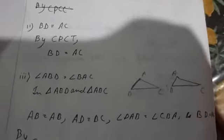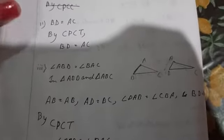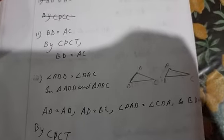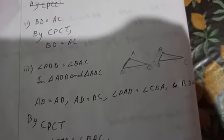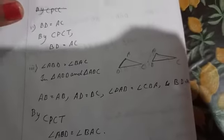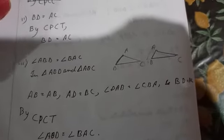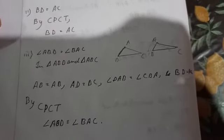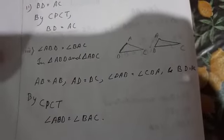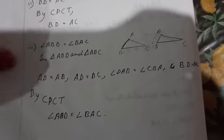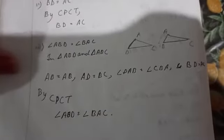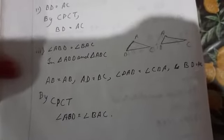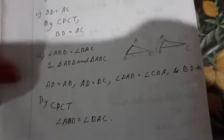For the third proof, angle ABD is equal to angle BAC as given. In both triangles, AB is common, AD is equal to BC, and from the second point we have BD equal to AC. So all three sides are equal. Therefore, by CPCT, angle ABD is equal to angle BAC.